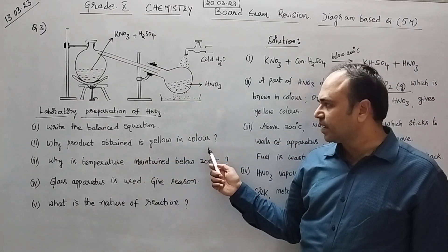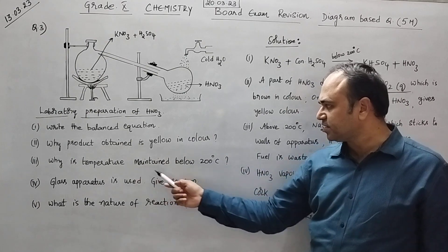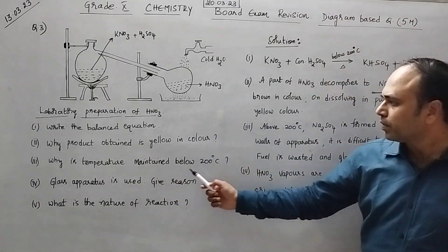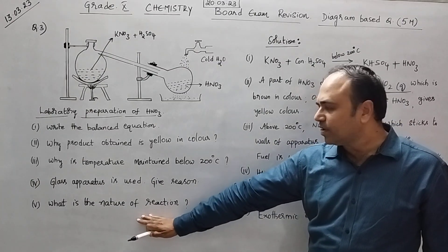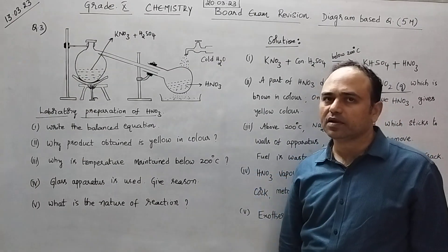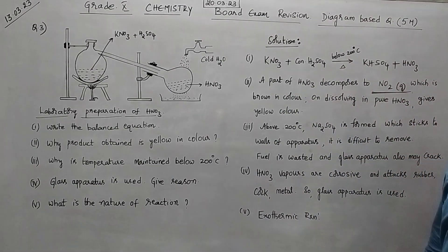So why the product obtained is yellow in colour is the second question. Third one why is temperature maintained below 200. Glass apparatus is only used and what is the reason. And finally what is the nature of the reaction whether it is exothermic or endothermic reaction.